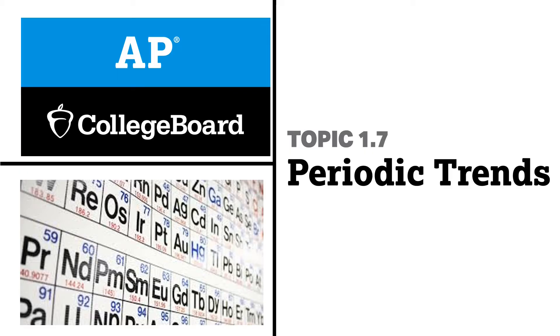Hello everyone, this is Topic 1.7 — Periodic Trends from AP Chemistry College Board. So let's start.